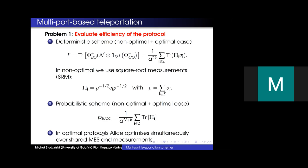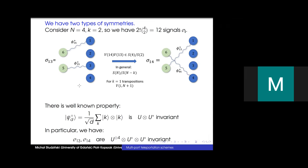We consider both the non-optimal case where parties share EPR pairs and the case where Alice optimizes simultaneously over shared maximal entanglement space and measurements. To proceed, we use tools from representation theory, and to identify which ones, we first identify symmetries in our problem. Consider an example with n=4 ports where we want to teleport two systems — in total 12 signals.